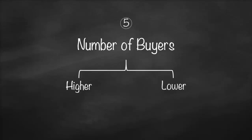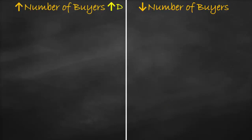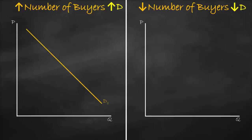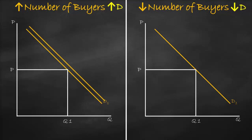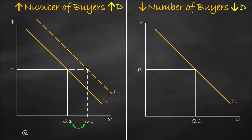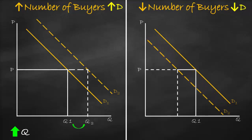Another factor is the number of buyers. Higher numbers of buyers means more people consuming, so demand is higher — the demand curve shifts right to D2, giving a higher quantity at the same price. A lower number of buyers means less consumption and lower demand — the curve shifts left, giving a lower quantity demanded at the same price.